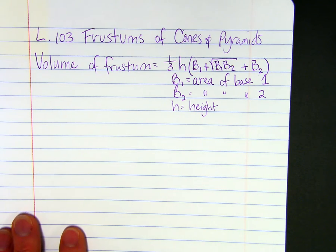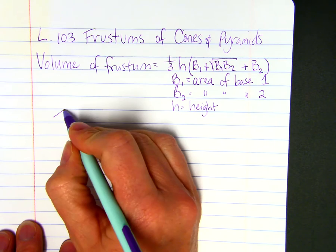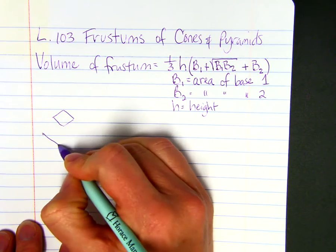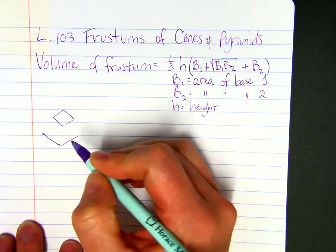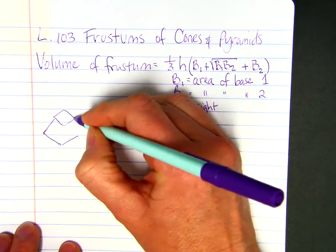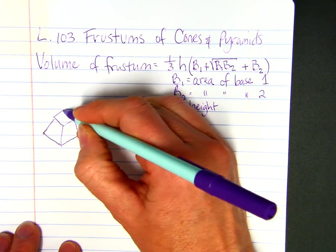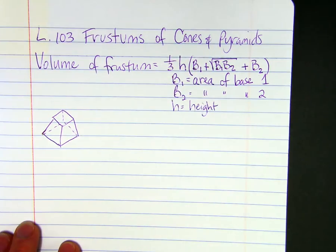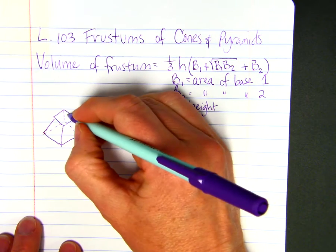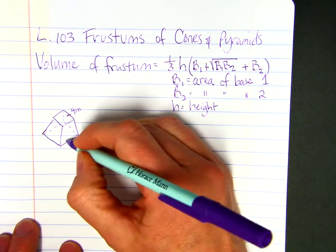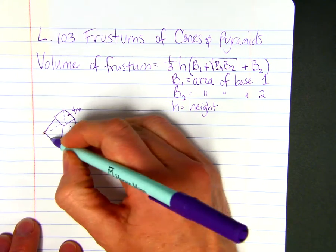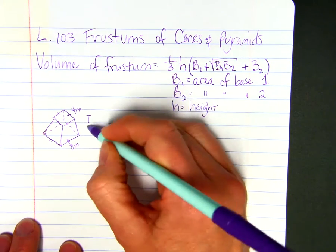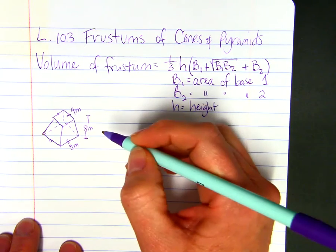So we're going to draw a rectangular pyramid that has the tip cut off. Something like that. So this is a square pyramid, square frustum. The height is 8 meters.